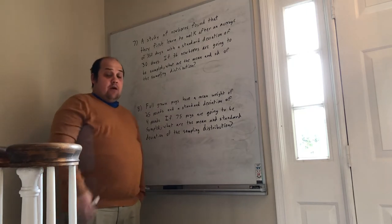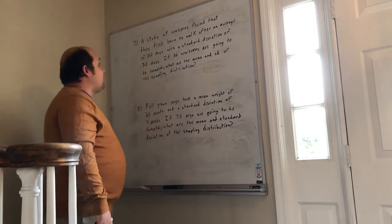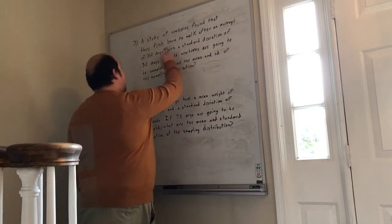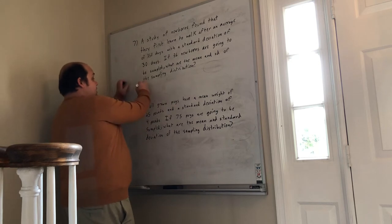As I look across the paragraph, they say an average of 350 days. An average is the original mean, or mu, so I'm going to write mu equals 350.